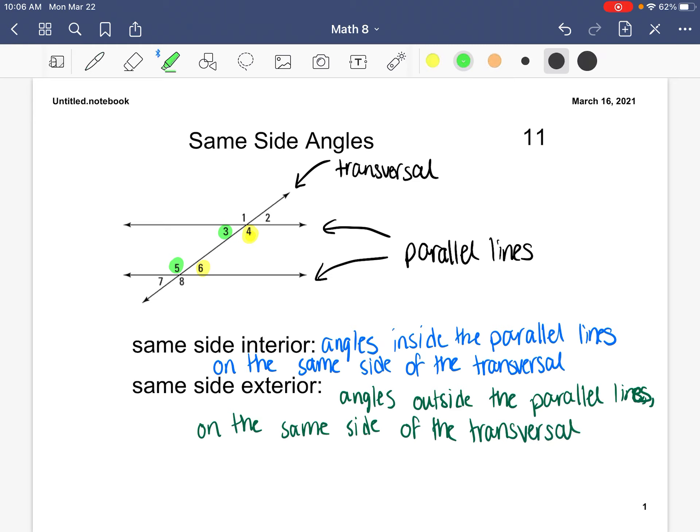So for example, we could have angle 1 and angle 7 as same side exterior angles or we could have angle 2 and angle 8 as same side exterior angles.